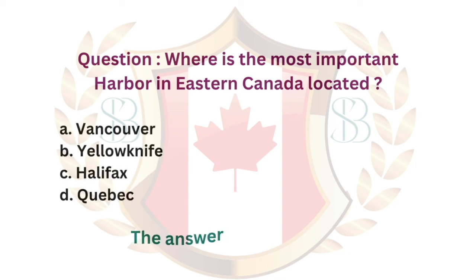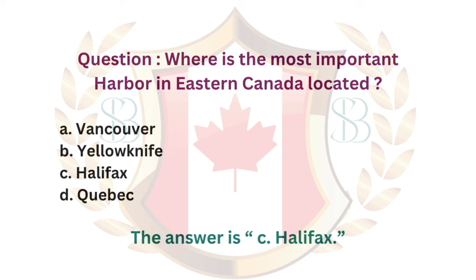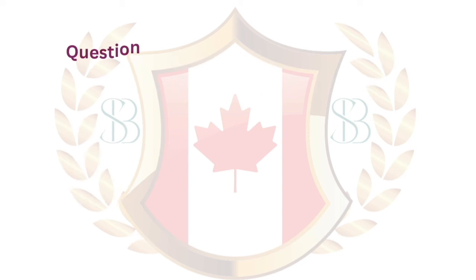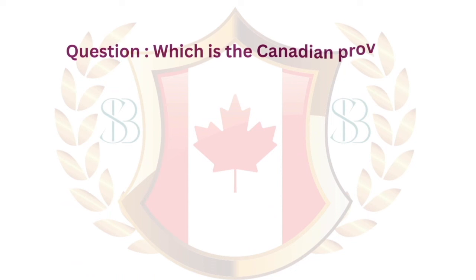Question. Where is the most important harbor in eastern Canada located? a. Vancouver. b. Yellowknife. c. Halifax. d. Quebec. The answer is c. Halifax.